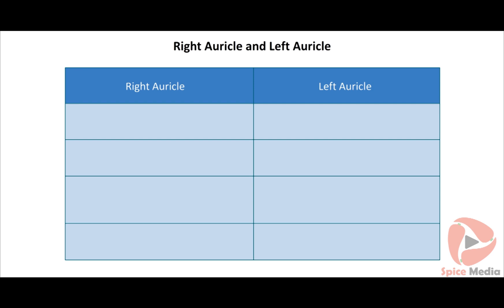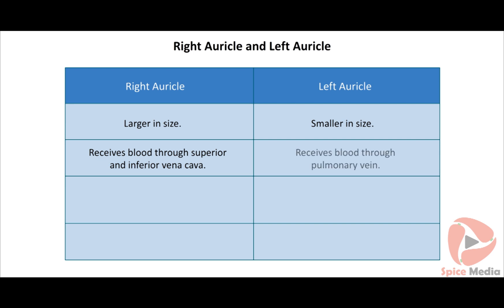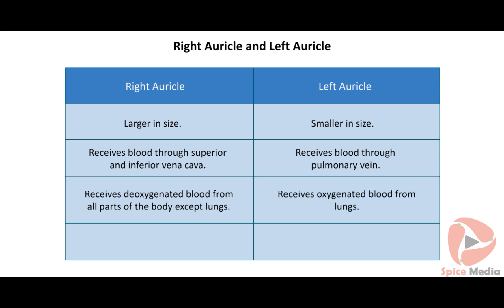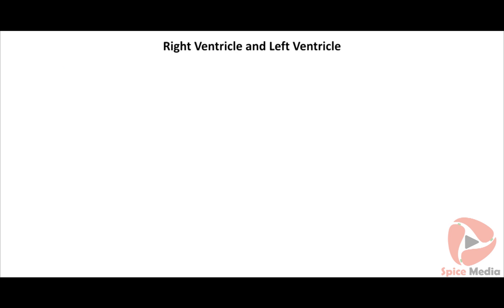The right auricle is larger in size than the left auricle. The right auricle receives blood through the superior and inferior vena cava, while the left auricle receives blood through the pulmonary vein. The right auricle receives deoxygenated blood from all parts of the body except the lungs, while the left auricle receives oxygenated blood only from the lungs.